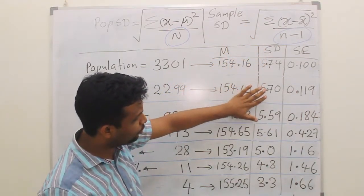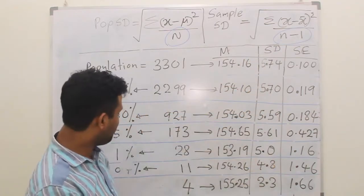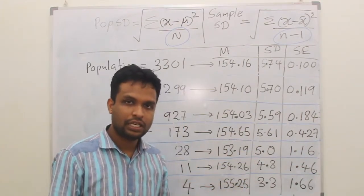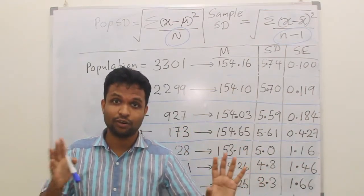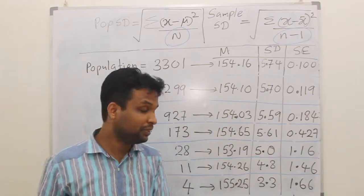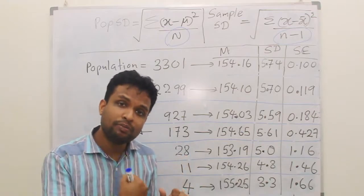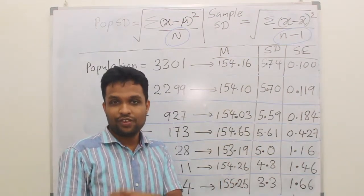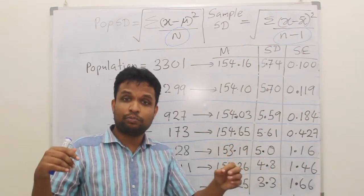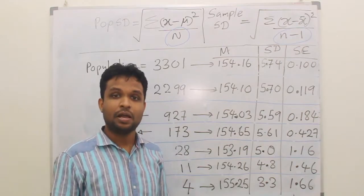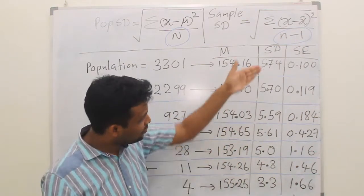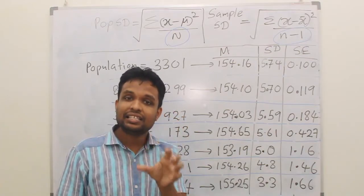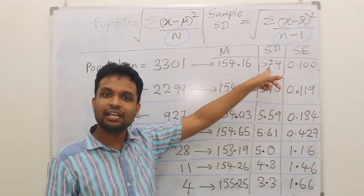But look at what has happened to the standard deviation: 5.74, 5.7, 5.7, 5.5, 5.6 — those are okay. But after some point, when your sample size is very small, the standard deviation starts going down. Standard deviation is a measure of dispersion — how well the values are distributed. With a low sample size, the probability of capturing outliers is lower, so dispersion will be lower. Therefore, the standard deviation will be slightly less compared to the original standard deviation.